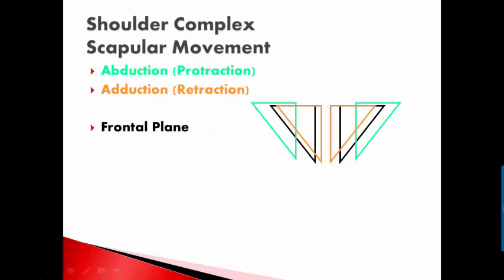You also have motion in the frontal plane — different terms are used for this — and this is basically hunching your shoulders forward. It involves taking your scapula and abducting or protracting it. Abduction means away from the midline, which in this case is your spinous processes. So as you hunch your shoulders, you're pulling the scapula away from your spine. As you push your shoulders back, the scapula goes into adduction or retraction, putting it towards the midline.